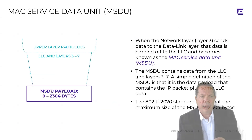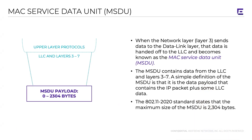A couple of terms you should know. First is a MAC service data unit. The definition of a MAC service data unit is effectively the layer three through seven information, plus some logical link control information. When it's sent down to the MAC sub-layer, you add a header and a trailer, and it becomes a frame. A simple definition: a MAC service data unit is an IP packet with some LLC information in it.